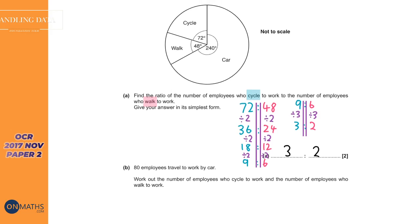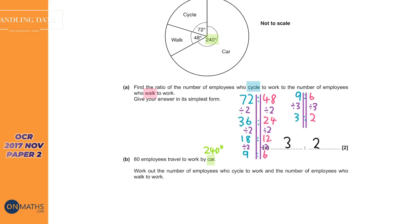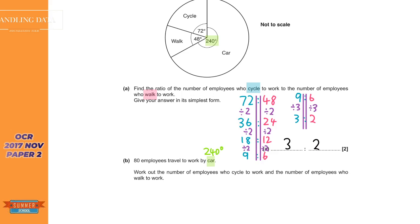So the next one says 80 employees travel by car. So let's just focus on the car. So car is 240 degrees. And it says 80 employees travel to work by car. And let's just write that in. And please feel free to annotate the exam. Work out the number of employees who cycle. So cycle is 72 degrees. So that's 72 degrees to work and the number of employees who walk to work. So walk is 48 degrees. Let me just write these all in so we know what we're talking about.